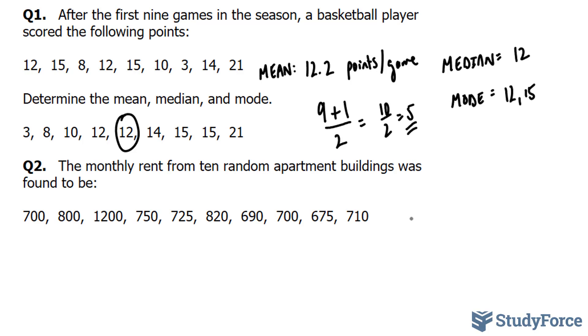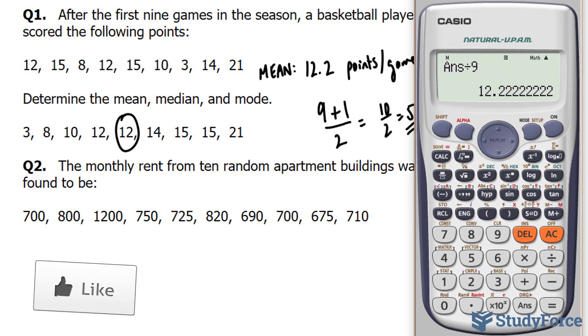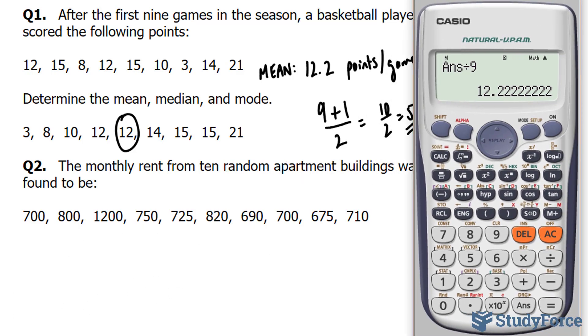We'll start off by finding the average, the mean, and we'll use the same method as before. We will add up all of these numbers and divide by the total number of points. So we have 1, 2, 3, 4, 5, 6, 7, 8, 9, 10.